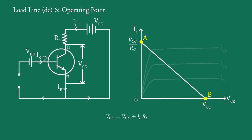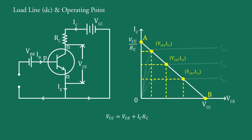It is important to note that the load line depends only on VCC and RC, and is totally independent of the transistor characteristics. The slope of the line depends on the resistance RC only and is equal to minus 1 upon RC. A load line represents all the possible combinations of IC and VCE for the given load resistance RC.